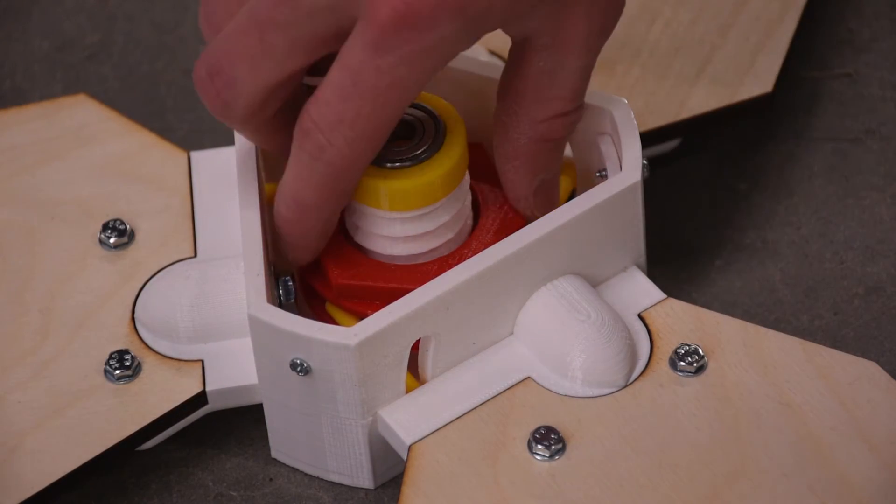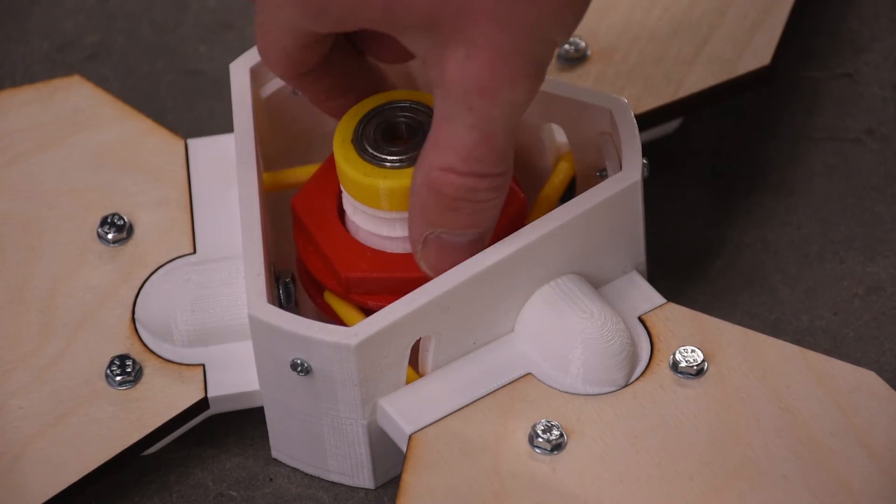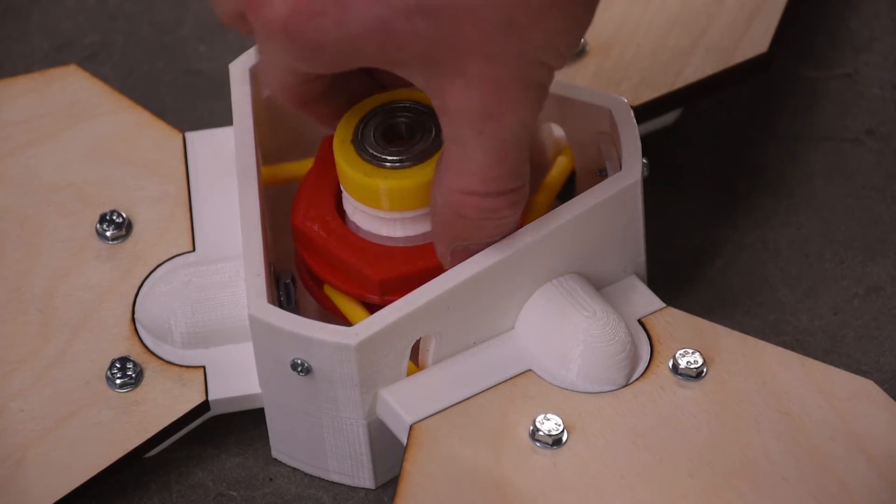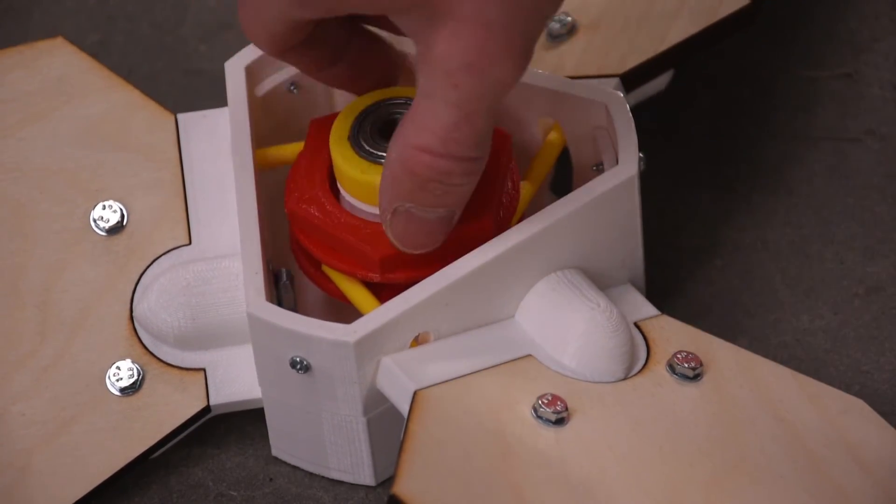As I turn the red collar, it moves in and out along this threaded post bringing the yellow pins with it. This forces the blades to tilt simultaneously and equally. You can see how easy it is to adjust.